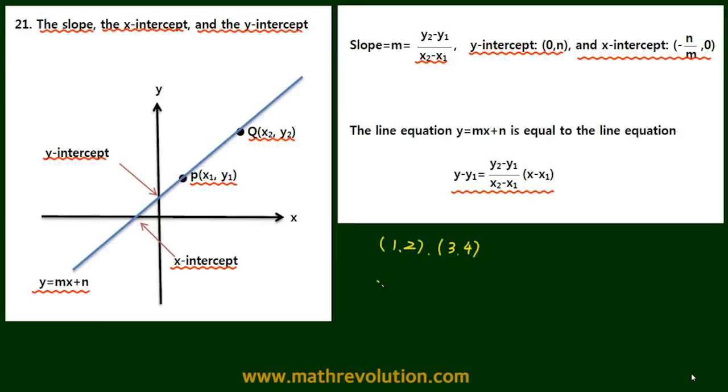then y minus y1 is y minus 2. It's x2 minus x1 and y2 minus y1 times x minus x1, which is x minus 1.